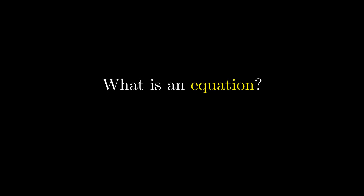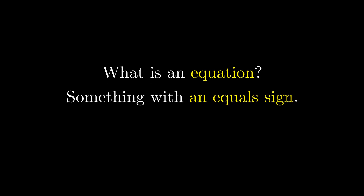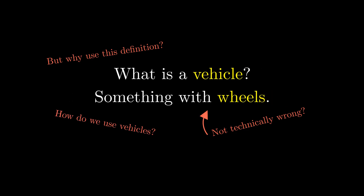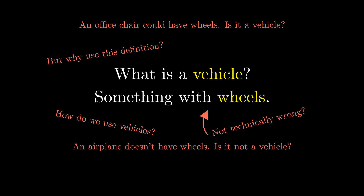What is an equation? Someone might say: something with an equal sign. Technically, this isn't wrong, but it only gives us a superficial explanation for what they look like without telling us much about why we write equations and how we use them. It's like if I asked, what is a vehicle? Saying something with wheels isn't wrong, but wouldn't you say it's a weird definition, since it doesn't tell us what a vehicle does or what it is used for? Why don't we hold our mathematical definitions to the same kind of standard?